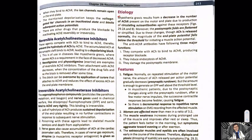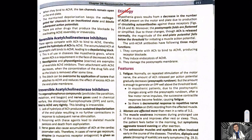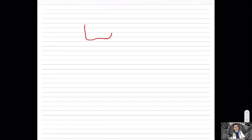Now let's look at the etiology. It is due to a decrease in the number of acetylcholine receptors. This occurs at the neuromuscular junction in myasthenia gravis.